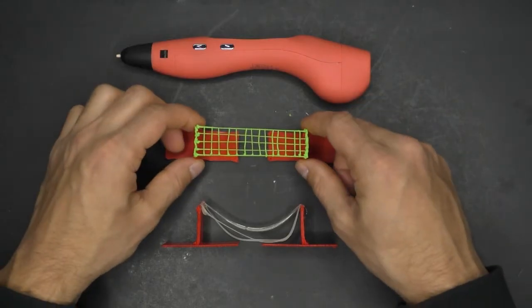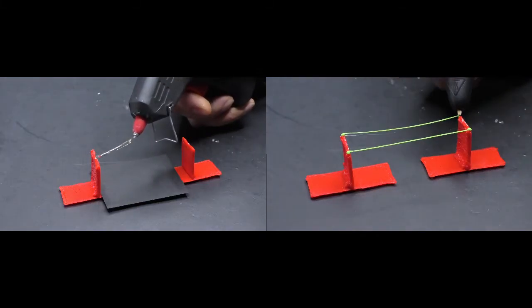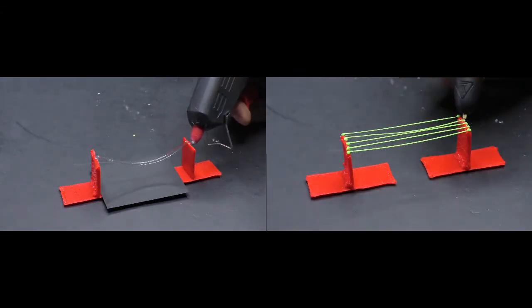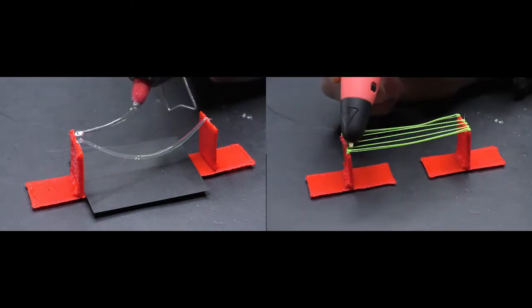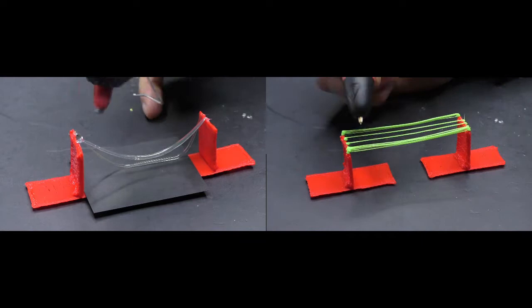And because 3D pens are portable, you can use bridging pretty much anywhere. Try doing this with a glue gun or making these types of structures out of only clay. I was actually surprised that the glue gun lines didn't break, but they sag like crazy and aren't rigid at all.